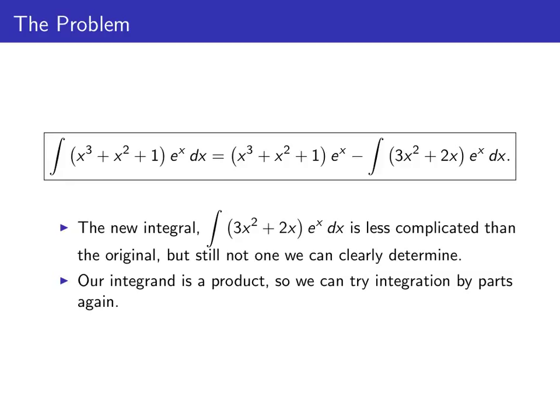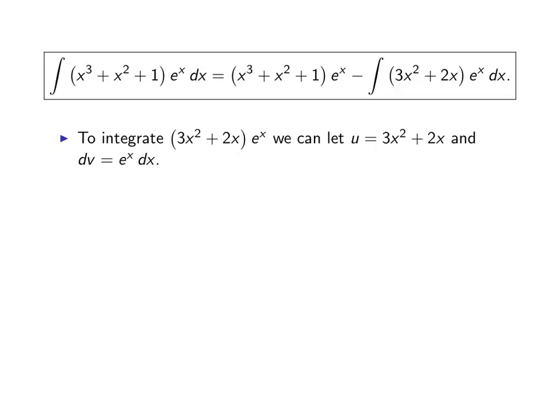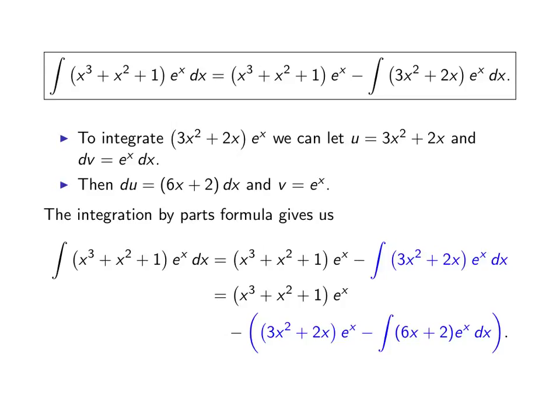The integrand is still a product — (3x² + 2x) times eˣ — so let's try integration by parts again. We set u equal to 3x² + 2x because differentiating the polynomial will make things easier, and dv = eˣ dx. So du = (6x + 2)dx and v = eˣ. Applying integration by parts to the integral of (3x² + 2x)eˣ dx gives us u times v — that's (3x² + 2x)eˣ — minus the integral of v du, which is eˣ times (6x + 2)dx.